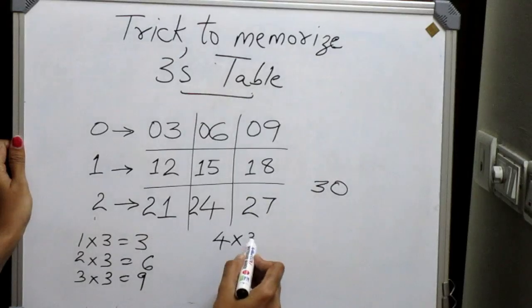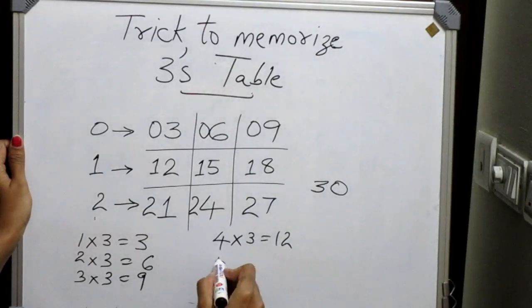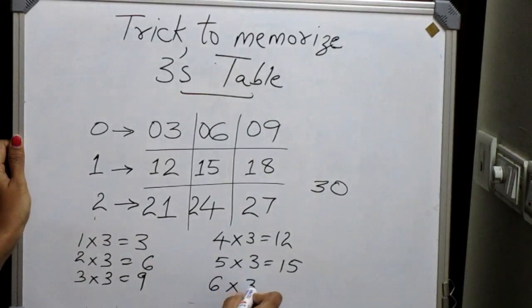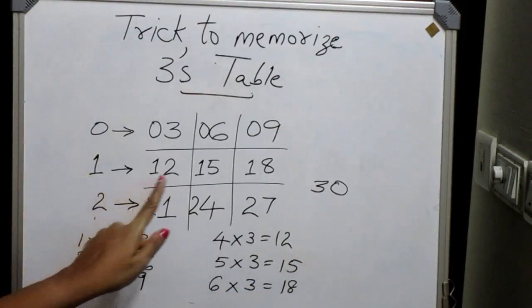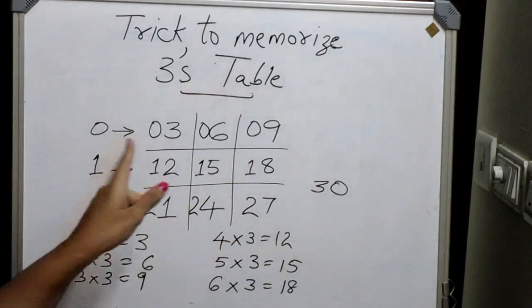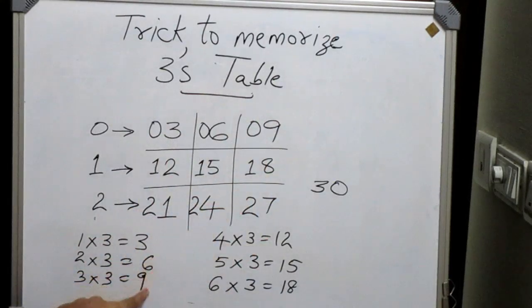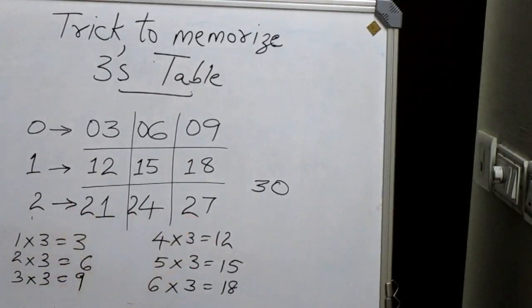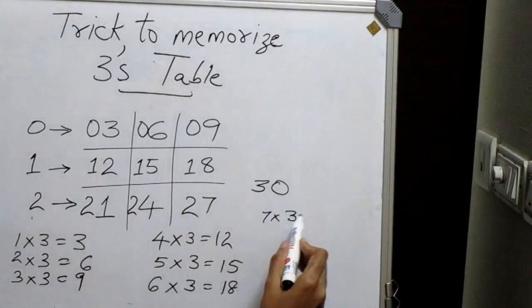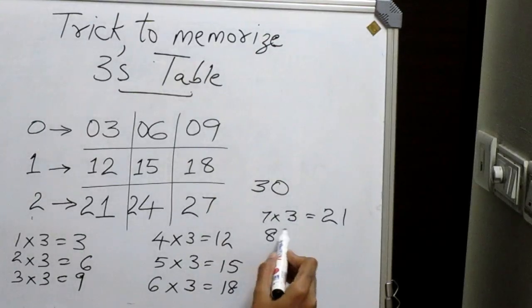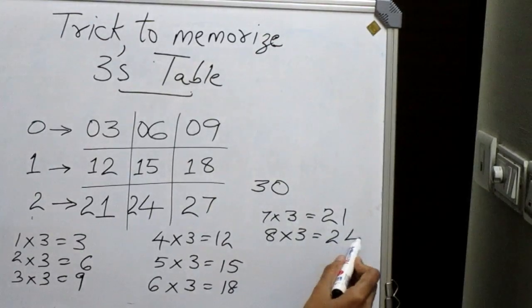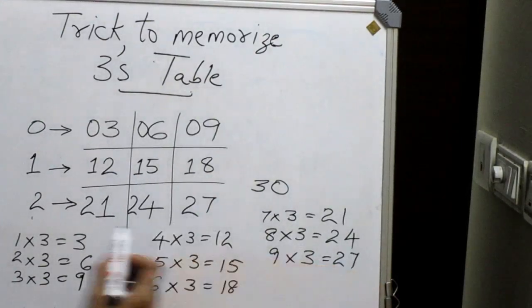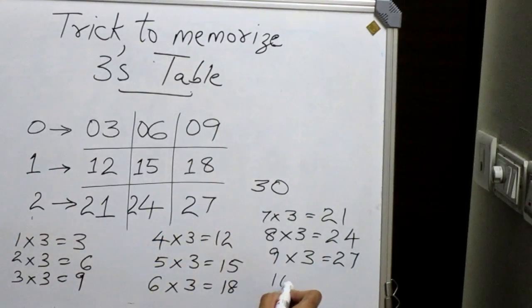Similarly we write the rest of the table: 7 into 3 equals 21, 8 into 3 equals 24, 9 into 3 equals 27 — which is our third row. And the final number: 10 into 3 equals 30.